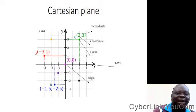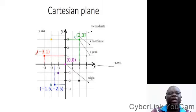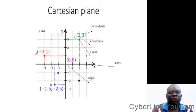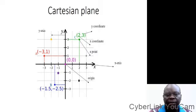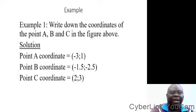Now take a look at that graph very well. What we have now is a Cartesian plane. It is a graph showing the x and y coordinates. It shows the coordinates and the points — the position of numbers on a plane surface. Now let's take this example: write down the coordinates of points A, B, and C in the figure above.